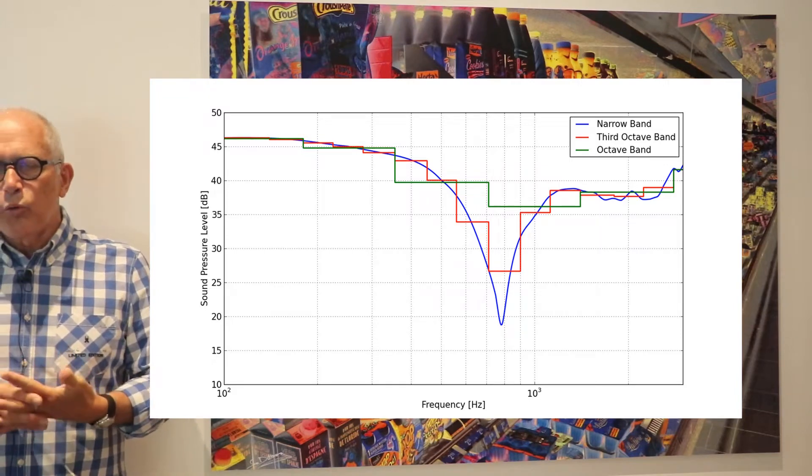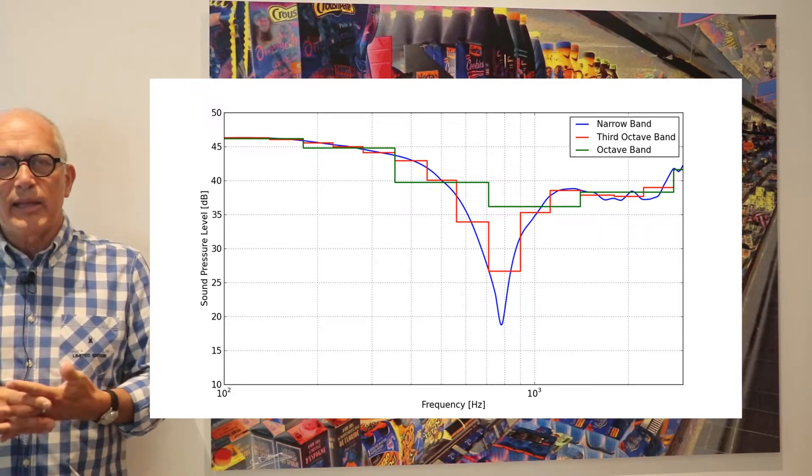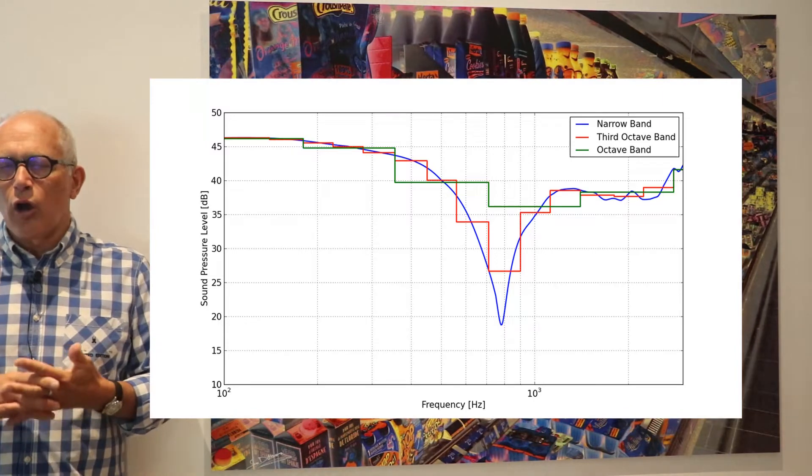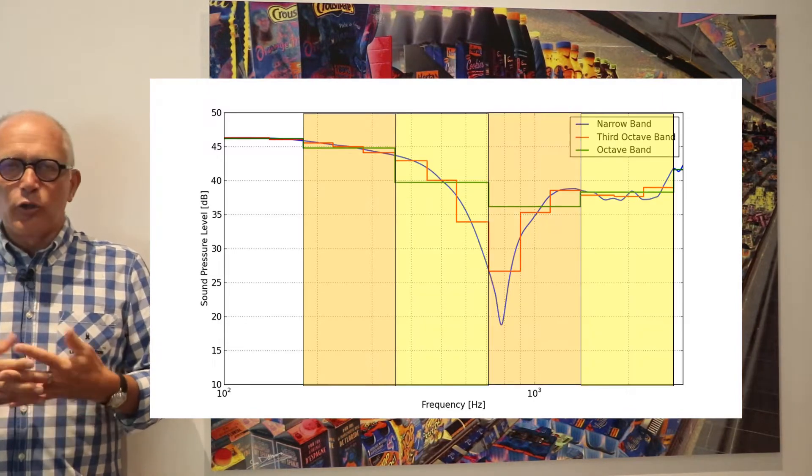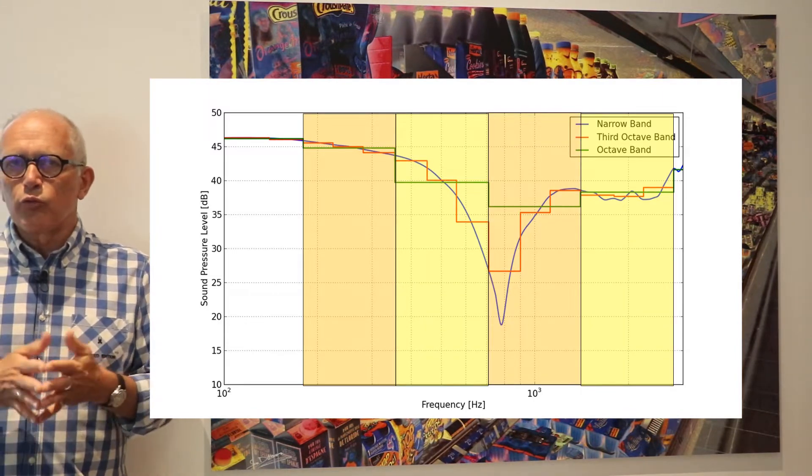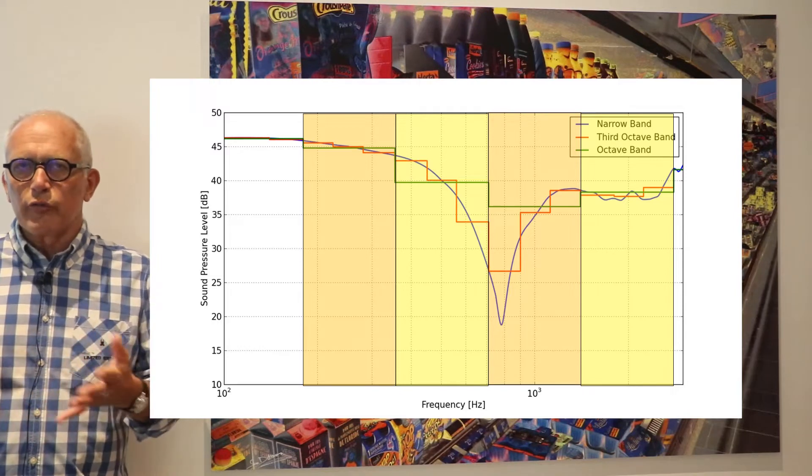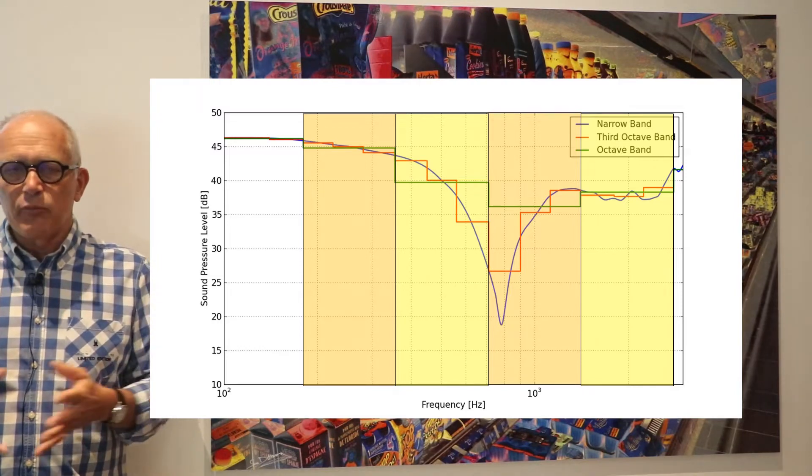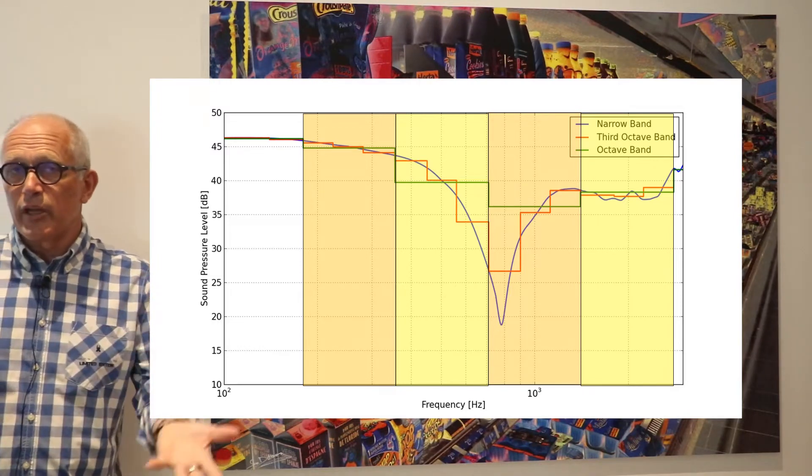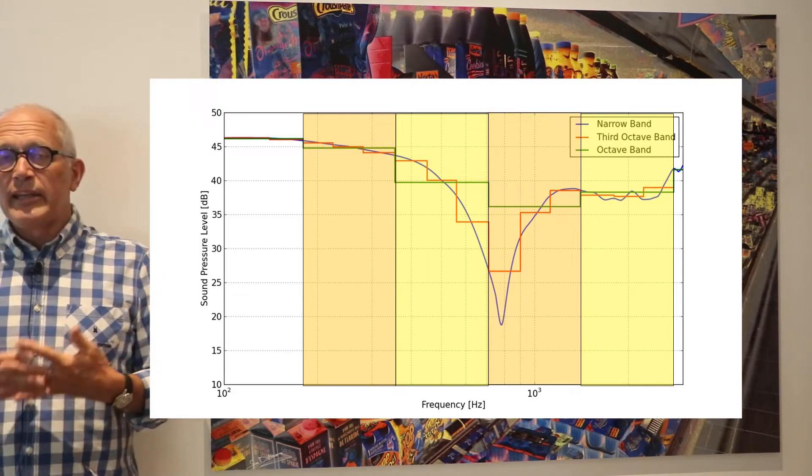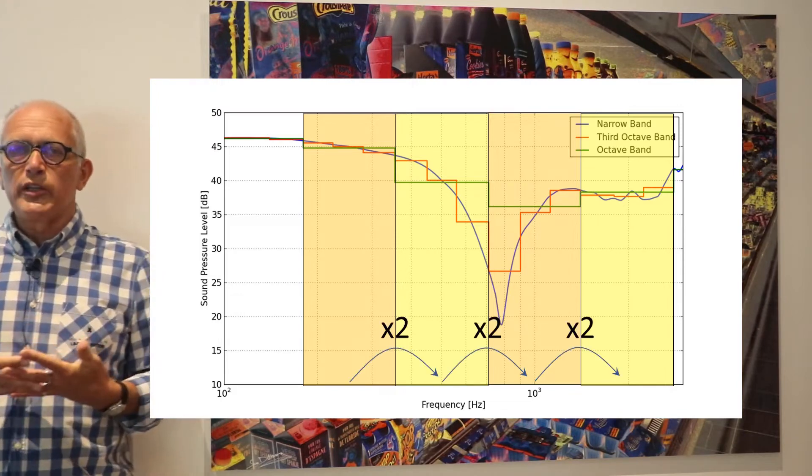The most widely used band types are called octave bands. An octave in music corresponds to the distance between two notes of equal names, so from a C to a C, from an A to an A, and it corresponds to a doubling of frequency.